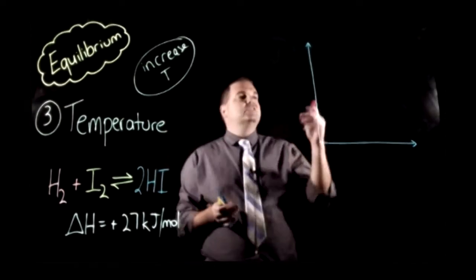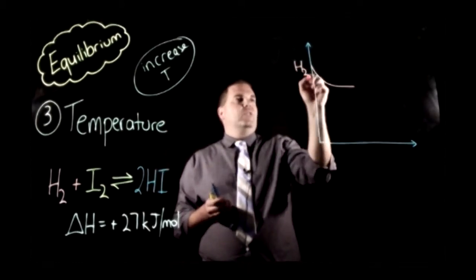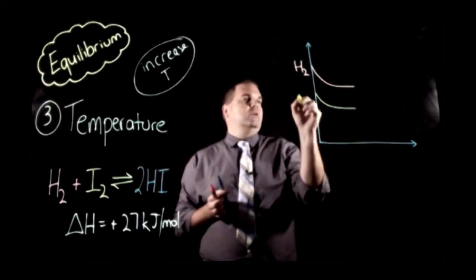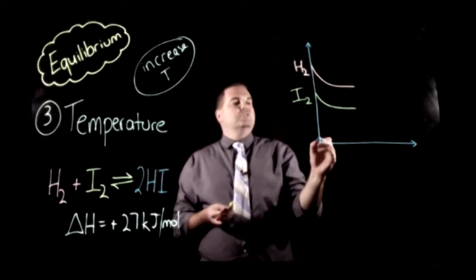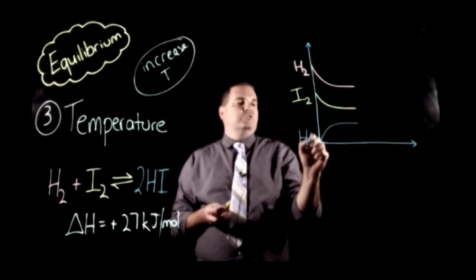So initially we have some hydrogen and some iodine, so here's our hydrogen initially. Here's our iodine initially. Again, it doesn't matter what the actual values of these are for the moment. There's no hydrogen iodide to begin with, so it reacts and here it is here. So there's our hydrogen iodide.